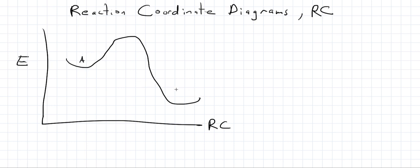So we might have A going to B, and up here we have our transition state. Anything to do with the transition state, we always denote with the double dagger.